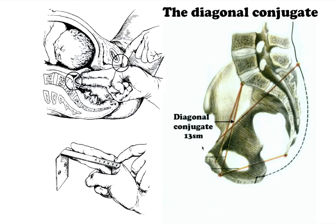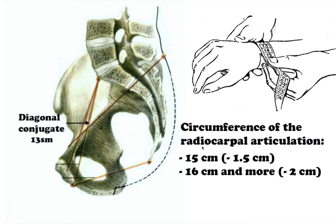In order to find the true conjugate, we need to subtract 1.5 to 2 cm from the diagonal conjugate, depending on the circumference of the radiocarpal articulation. If the circumference is 15 cm, we subtract 1.5 cm. If it is 16 cm or more, we subtract 2 cm.